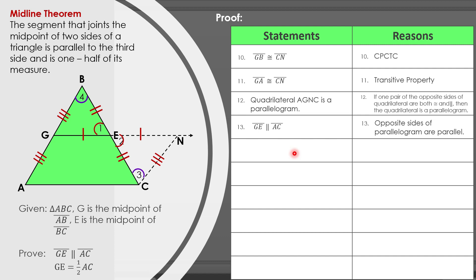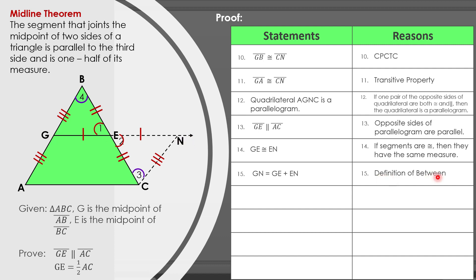Continuing our two-column proof, statement 14: GE is congruent to EN, with the reason being that if segments are congruent, they have the same measure — as stated in statement 1. Statement 15: GN is equal to GE plus EN, by the definition of betweenness. Statement 16: GN is equal to GE plus GE, which equals 2GE, using substitution and addition property — substituting GE for EN since they are congruent.